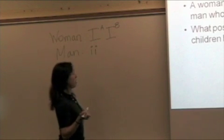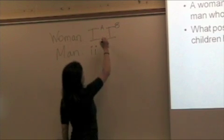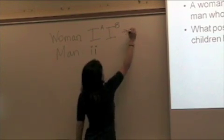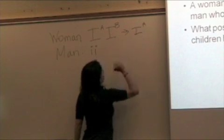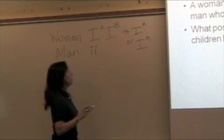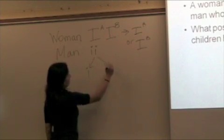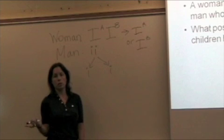Then we figure out what gametes they can make. The woman could give her child the A allele or the B allele. The dad could give a little i or a little i. Those are his only options.